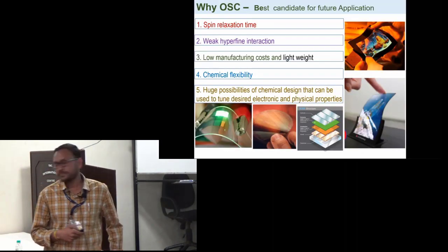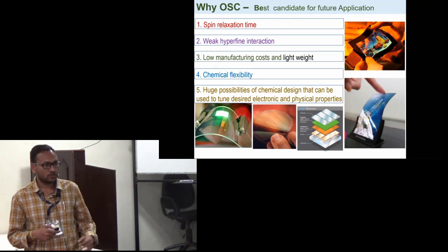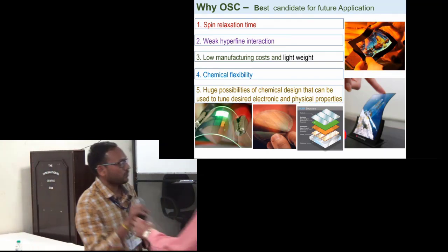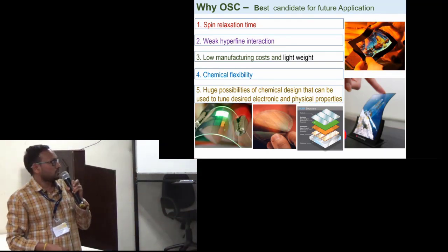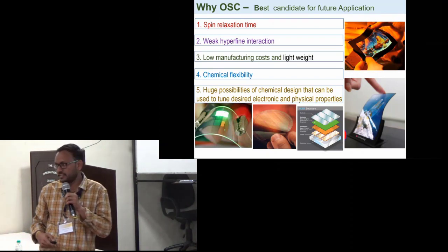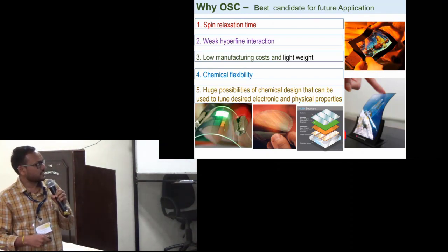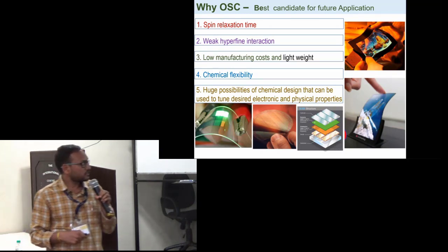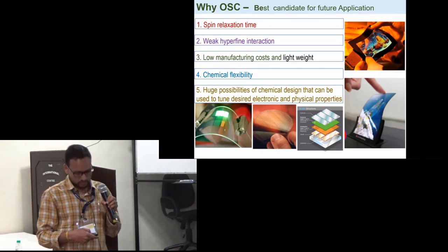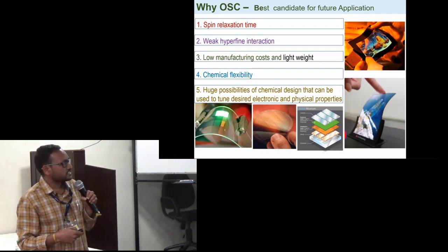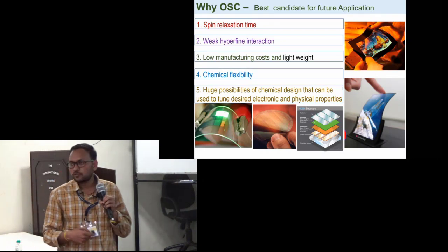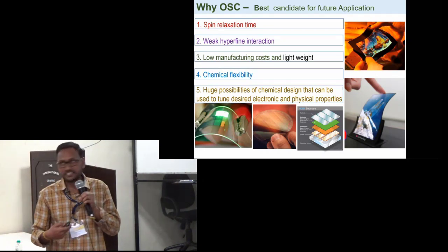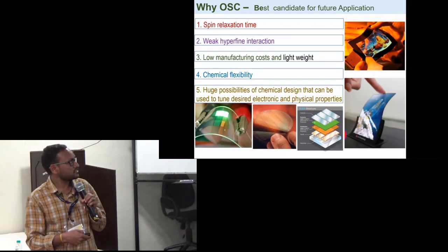Why use organic spintronics? It is the best candidate for future applications because it has high spin relaxation time with weak hyperfine interaction, low manufacturing cost, lightweight, and high chemical flexibility. The main applications nowadays like OLEDs and plastic electronics are the best examples for this.